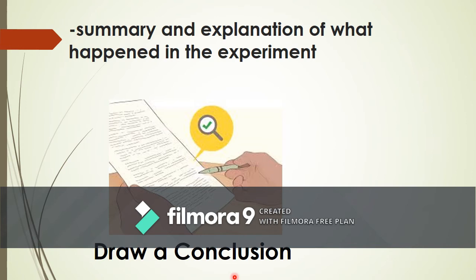After analyzing data, we draw a conclusion. A conclusion is a summary and explanation of what happened in the experiment. In Redi's experiment, he concluded that maggots appeared in the jar left open, meaning maggots come from flies. Francesco Redi concluded that his hypothesis — that maggots come from flies that lay eggs on the meat — was correct. This does not support spontaneous generation, which claimed maggots come from meat.